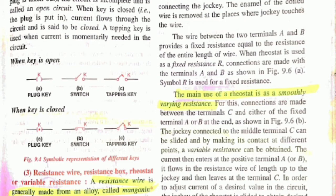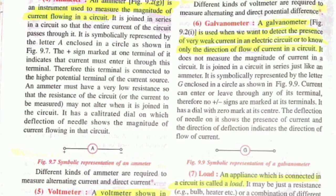Galvanometer is used to detect small current. Load appliances which can be connected to a heater, bulb, or other substances can also be used.